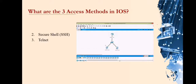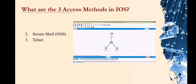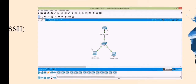The third access method in IOS is Telnet. Telnet is the opposite of SSH — it is an insecure method of remotely establishing a command line interface session through a virtual interface over a network. It does not provide a secure encrypted connection, and password authentication codes are sent in plain text. The picture shown here is an example of a packet tracer used in connecting devices.